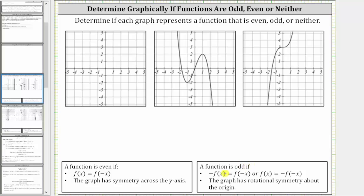A function is odd if the opposite of f of x equals f of negative x, or f of x equals the opposite of f of negative x. The graph has rotational symmetry about the origin. If we turn or rotate the graph about the origin less than one complete rotation and the graph looks exactly the same, the graph has rotational symmetry about the origin.